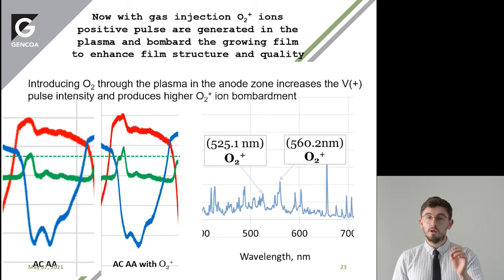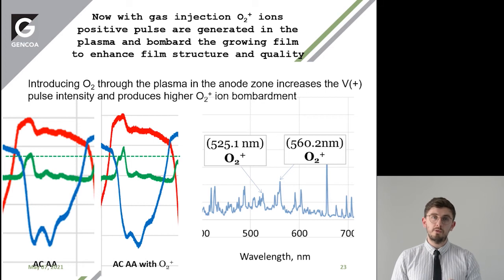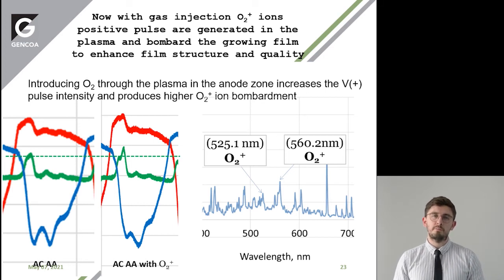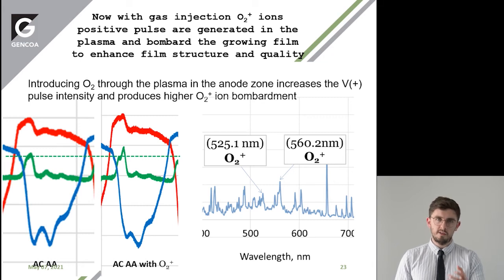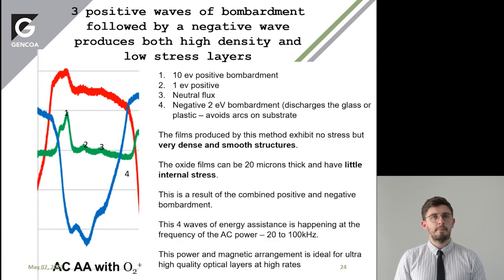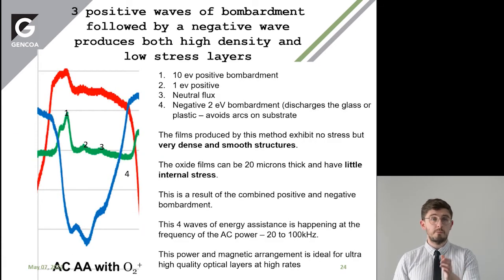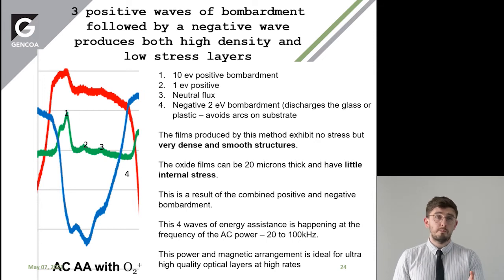When we look closely at these, you can see that introducing O₂ through the plasma and the anode zone increases the voltage pulse intensity when the gas is injected through the active anode. So it produces higher O₂ ion bombardment when injecting the gas through the anode. Looking a bit closer at this waveform, you can break it down into its components — at point one, we're getting this 10 eV pulse of bombardment.